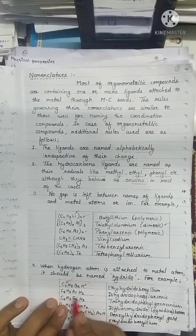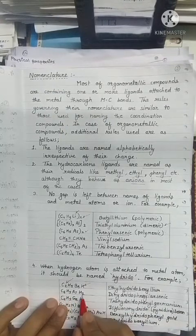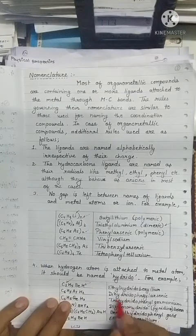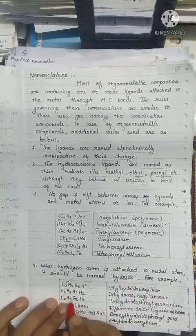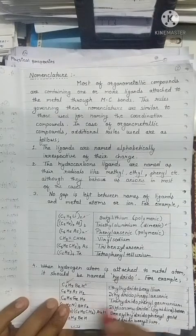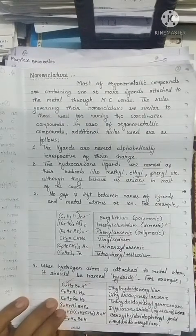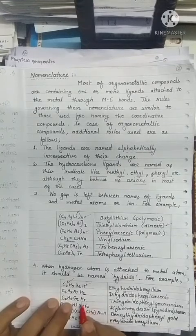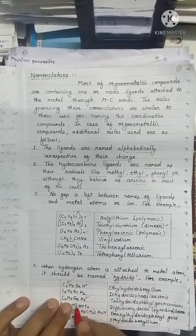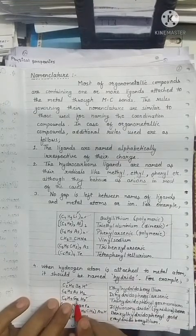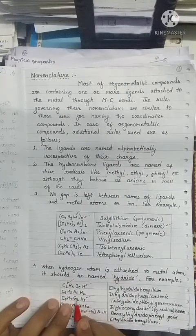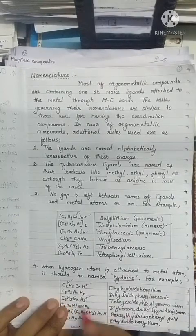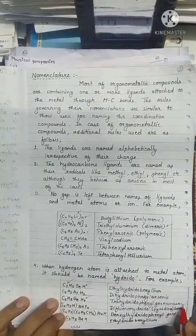In this case, consider the alphabetical order: H comes before P, so the name is dihydrido phenyl arsenic. In this next case, 3 hydrogens are attached to germanium, so the name is trihydrido phenyl germanium.